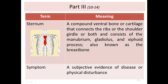The sternum consists of the manubrium — the upper part — the gladiolus — the middle part — and the xiphoid process — the lower part. It is also known as the breastbone.